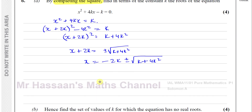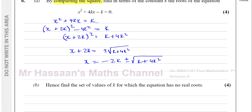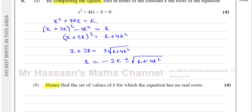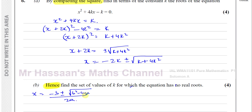Now we're going to go on to part B. It says: hence, find the values of k for which the equation has no real roots. The word 'hence' means using your previous answer. Normally when asked to show an equation has no real roots, we would use the discriminant — we'd say b squared minus 4ac is less than zero, because if what's underneath the square root in the quadratic formula is negative, there will be no solution. It will be undefined, so it has no real roots when this is negative.